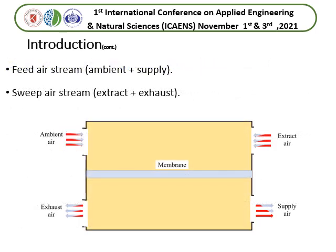Here is the schematic of the Membrane Based Naturally Covered Ventilator. It is divided into two air streams: feed air streams and sweep air streams. The feed air stream carries air from the atmosphere and supplies it to the room, while the sweep air stream carries air from the conditioned state and expels it out to the atmosphere.